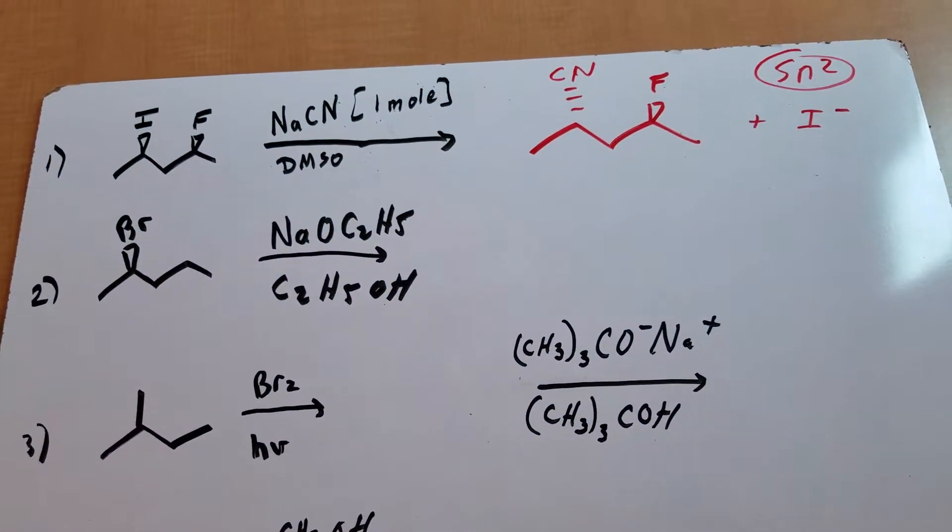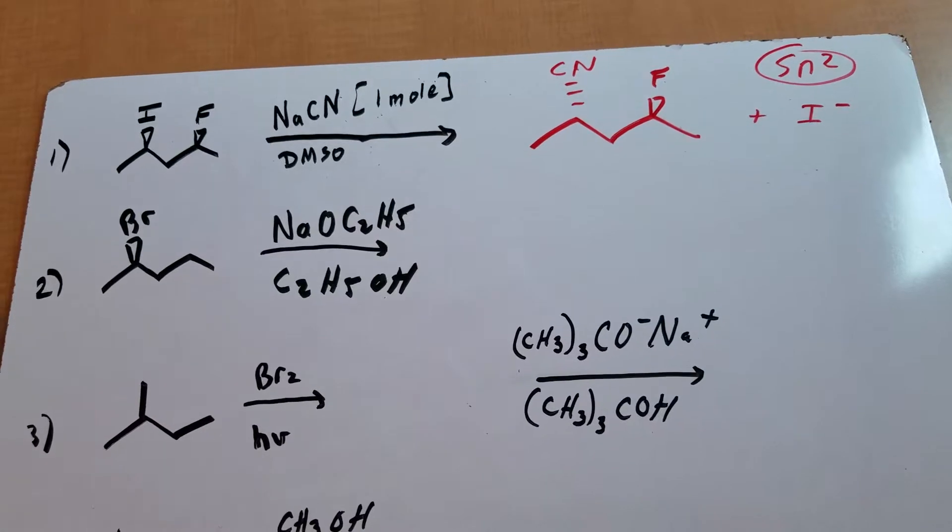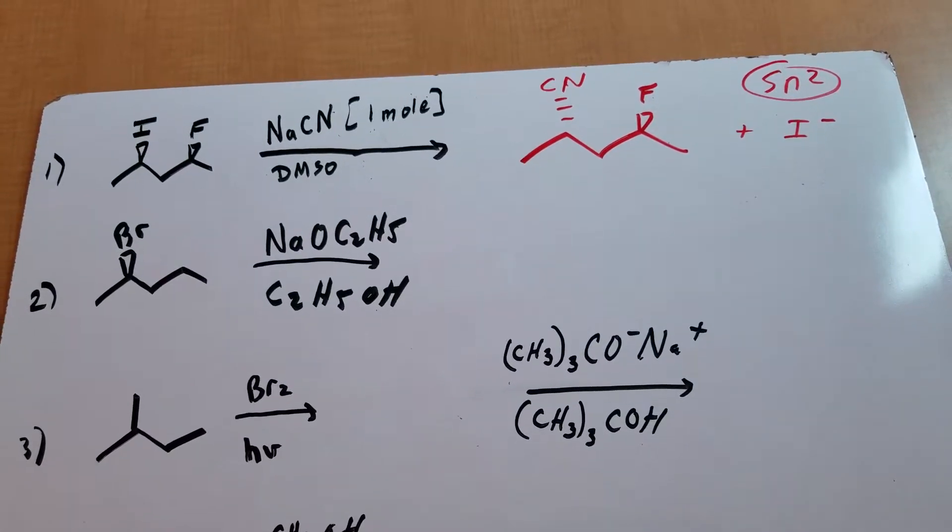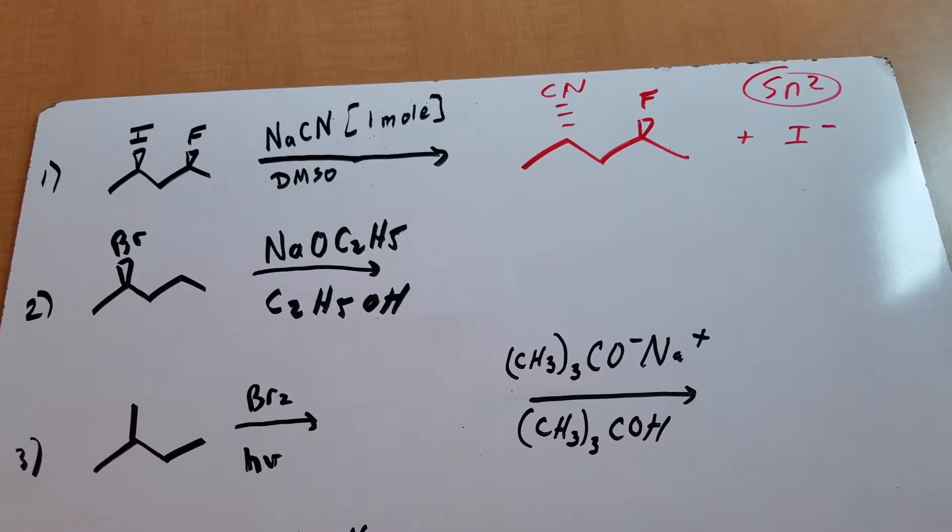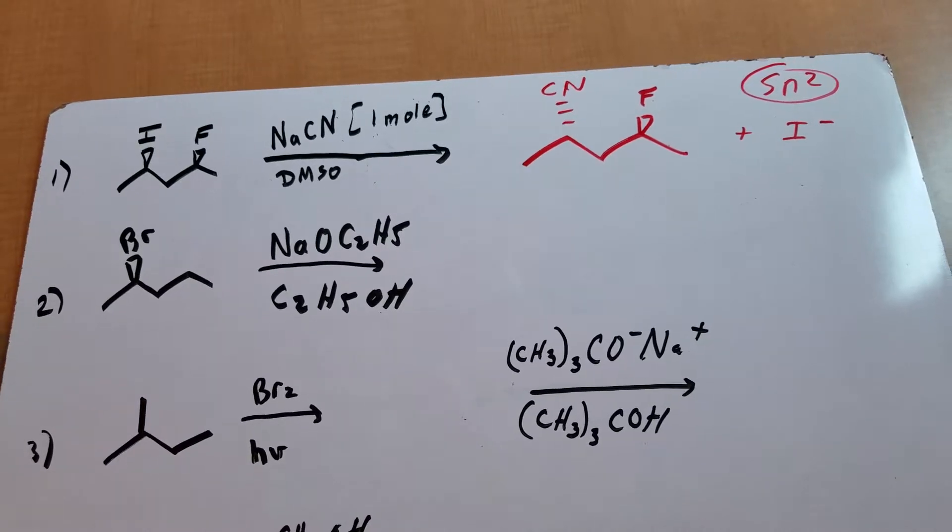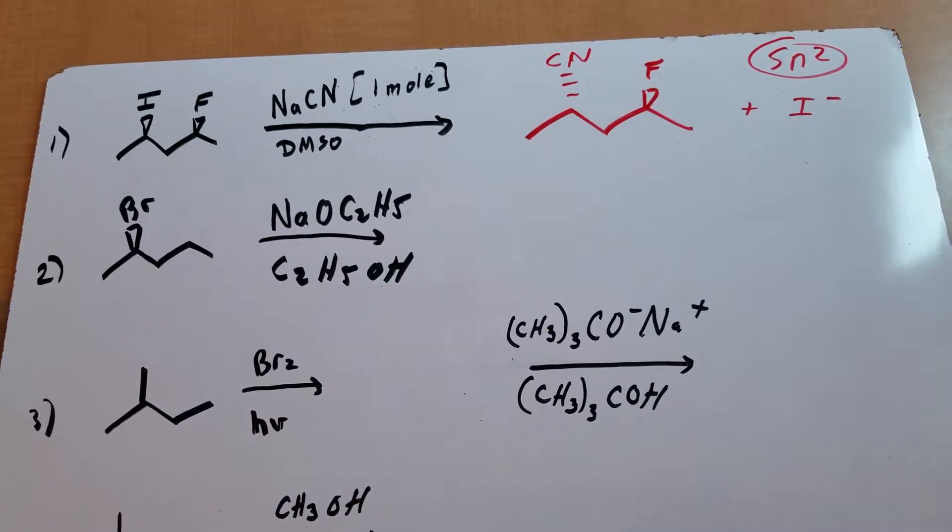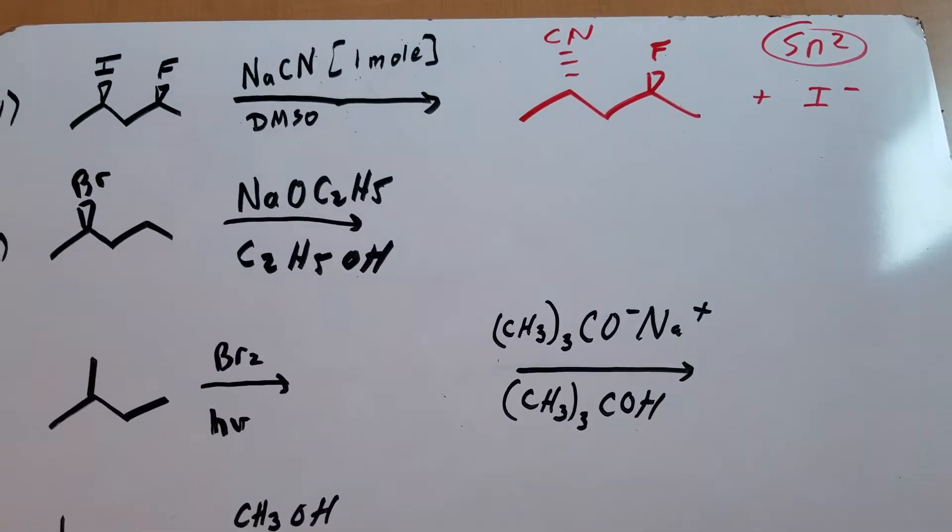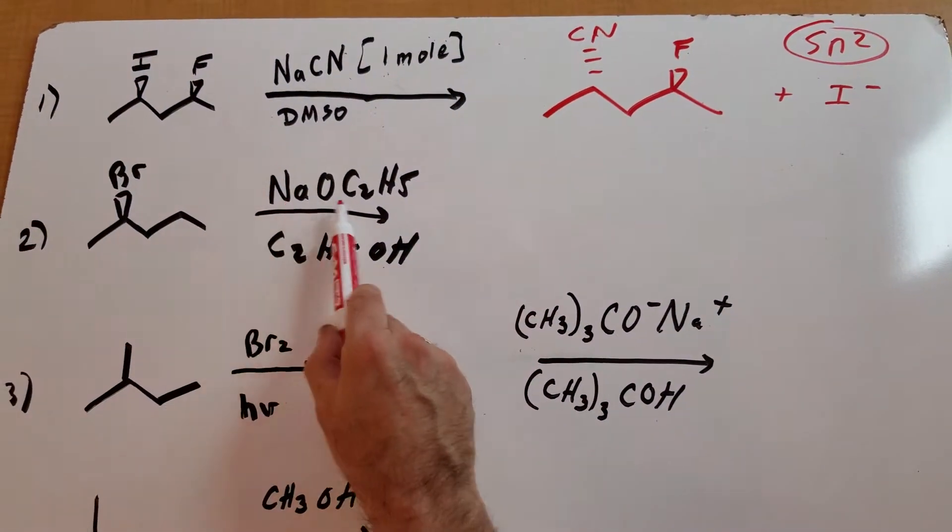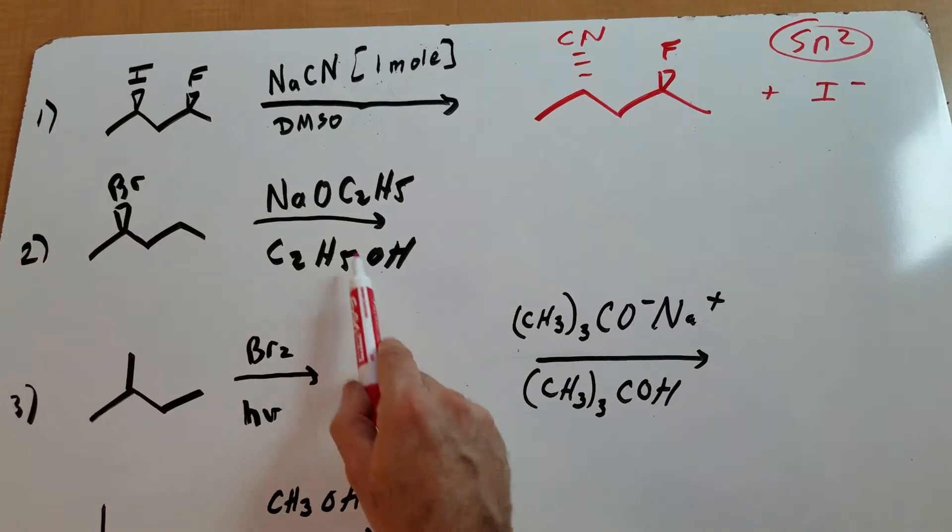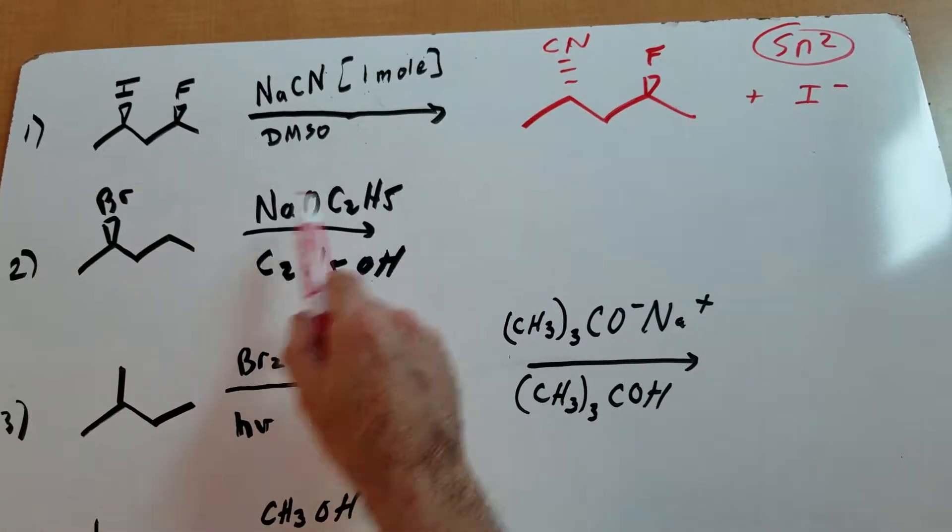Notice in SN2 we always like to use a solvent that's polar aprotic. Good examples of polar aprotic would be something like DMSO or DMF. Problem number two is another secondary halide, but if you look at the conditions, don't focus on the solvent—focus on this reacting nucleophile.